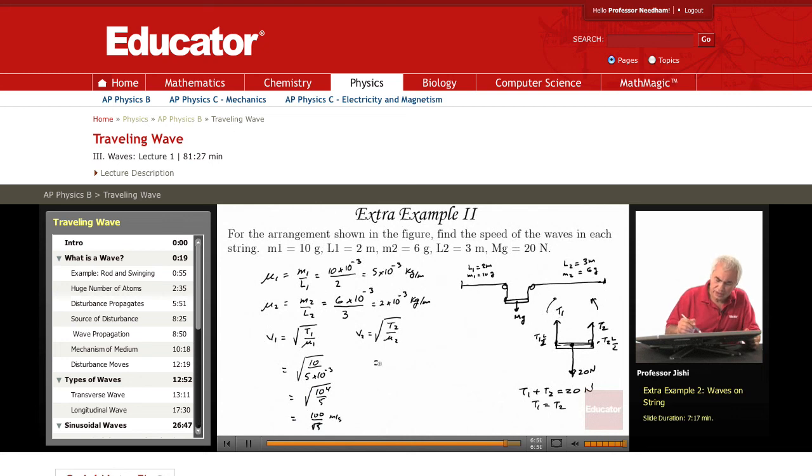V2 again is 10 divided by μ2, which is 2 times 10 to the minus 3. So this is 10 to the 4 over 2. So the square root becomes 100 divided by root 2 meters per second. So that's how we get the speeds on either string.